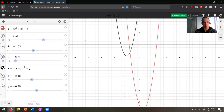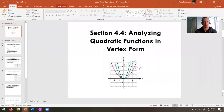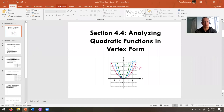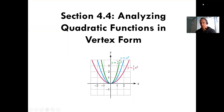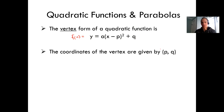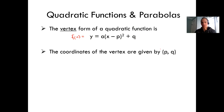Okay, that's the introduction — we're going to get to the notes. This is section 4.4: analyzing quadratic functions in vertex form. Vertex form of a quadratic function: if you're upset I didn't write f(x) notation, go ahead and do that, but it doesn't really matter. What we have is y equals a(x minus p) squared plus q. The whole point of this is the vertex coordinates are given by p comma q.